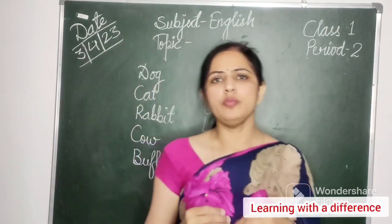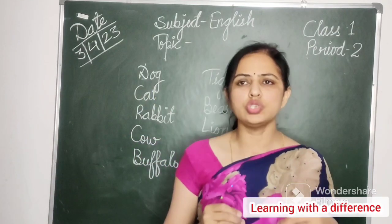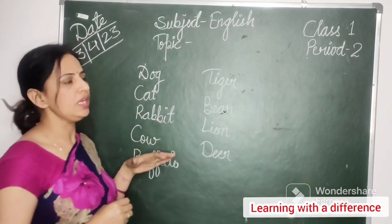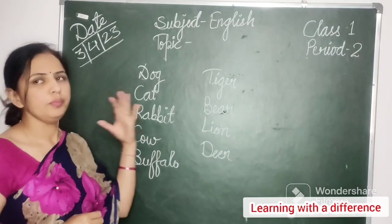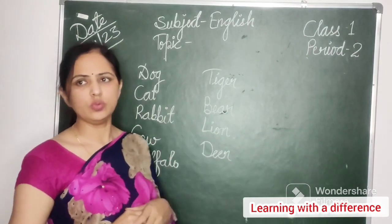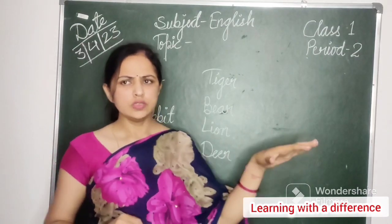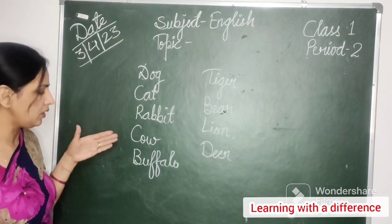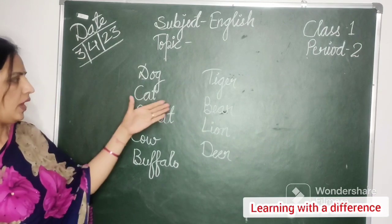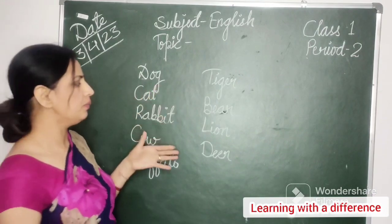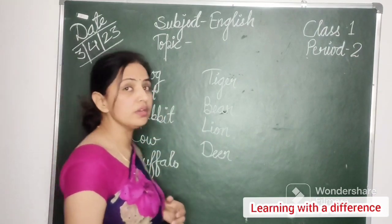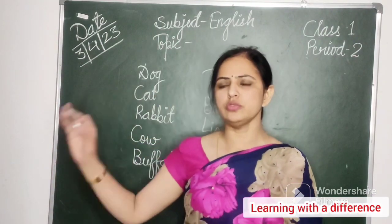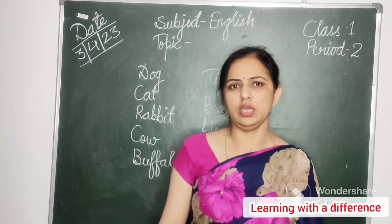So you have told ma'am a few domestic and pet animals, and a few wild animals. All of you look here: dog, cat, rabbit, cow, buffalo, tiger, bear, lion, deer — so many animals you have told ma'am.